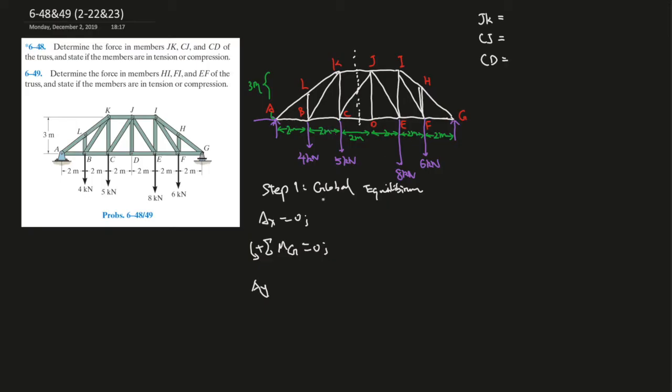So AX we can already draw a conclusion equal to zero, because that's the only force going to the X direction in this entire structure. So now if we want to find AY, just use the sum of the moments at G. Going counterclockwise is the positive direction. So AY is going to the negative.